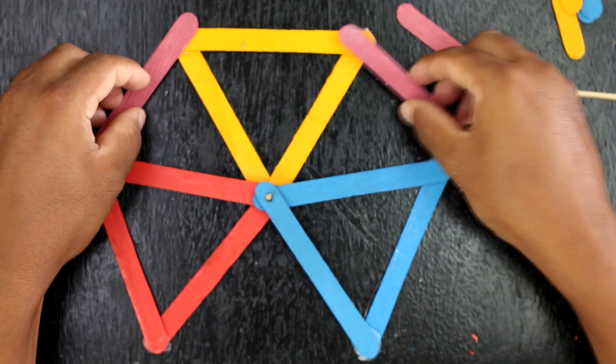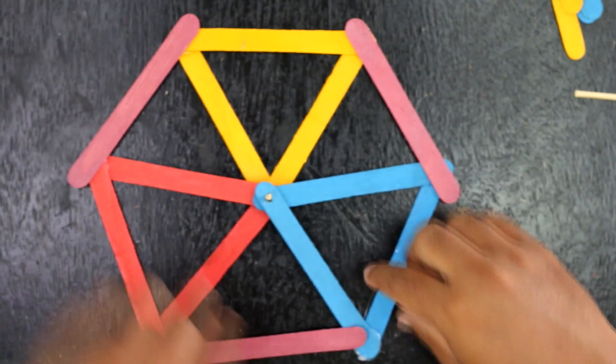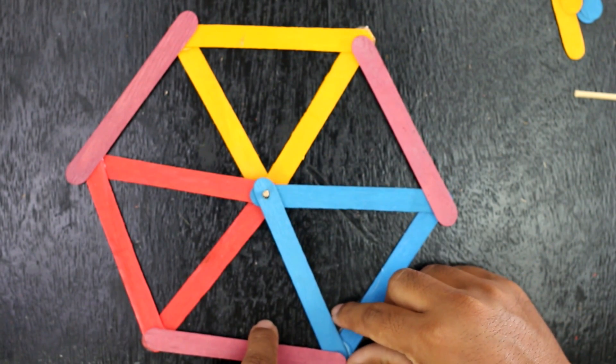Now make a wheel shape by adding the 4th color popsicle sticks. We have made a hexagonal wheel.